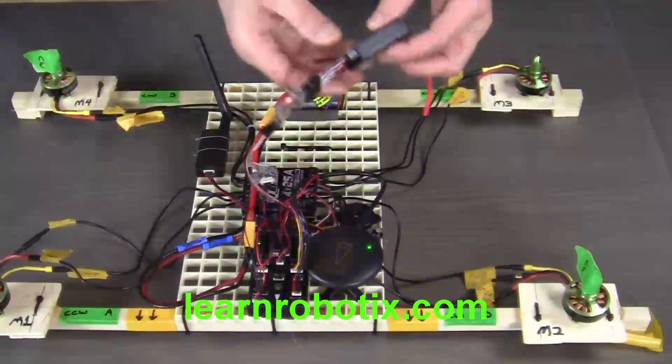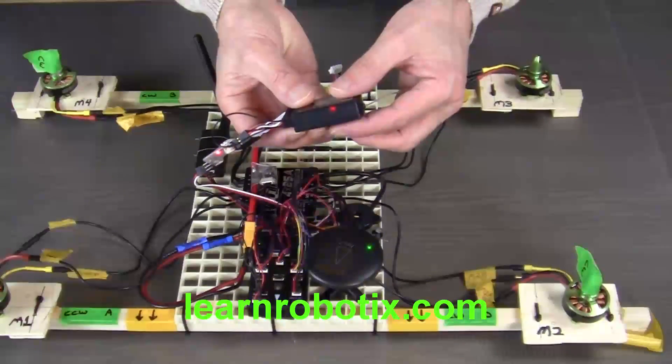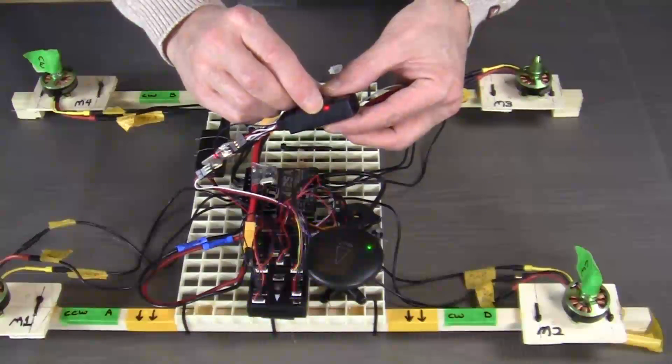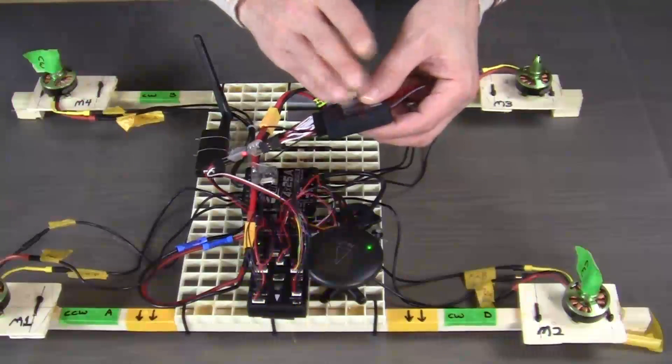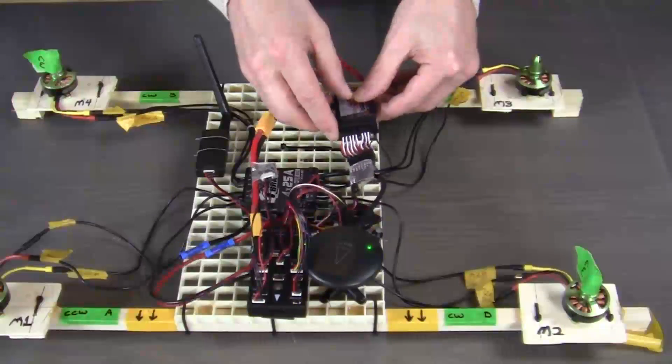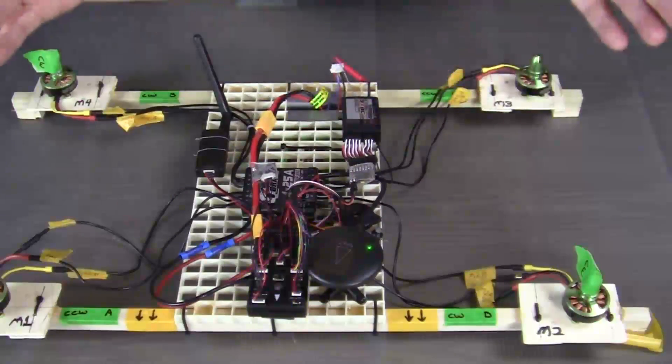Now, when we look at the receiver, we will see that the light on the receiver is solid. This means that the receiver and the transmitter are now bound together. And it's that simple.